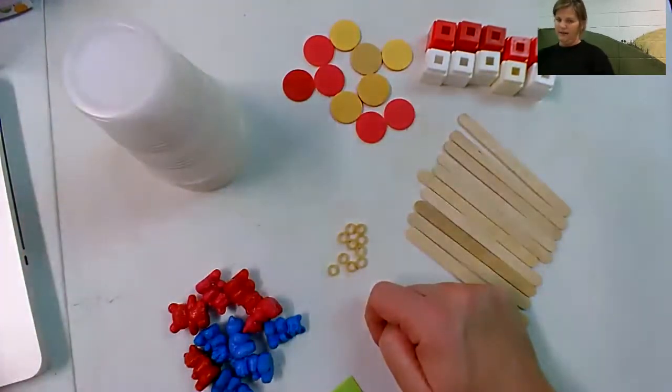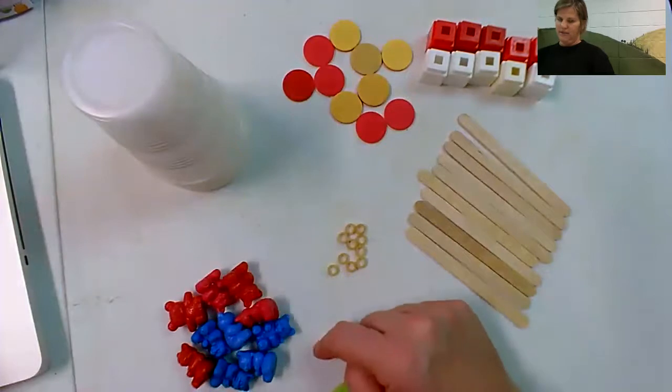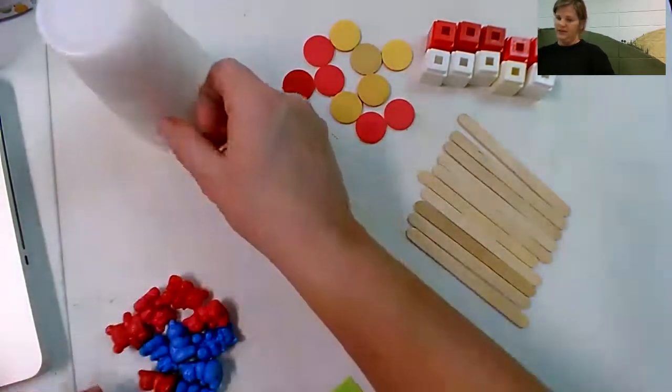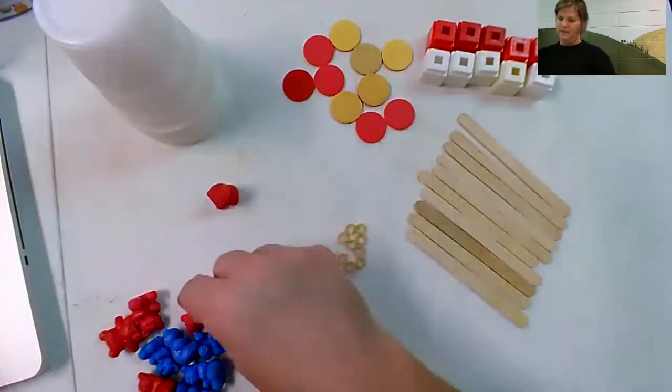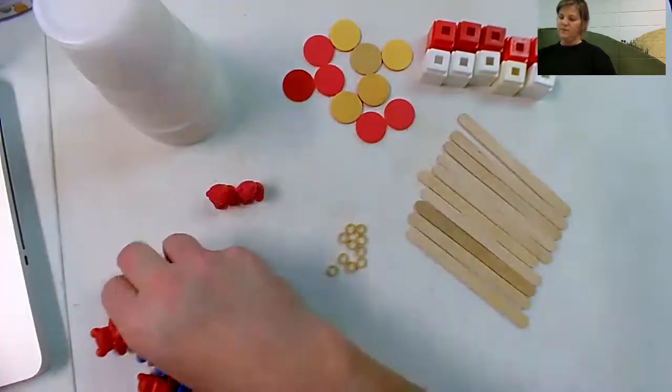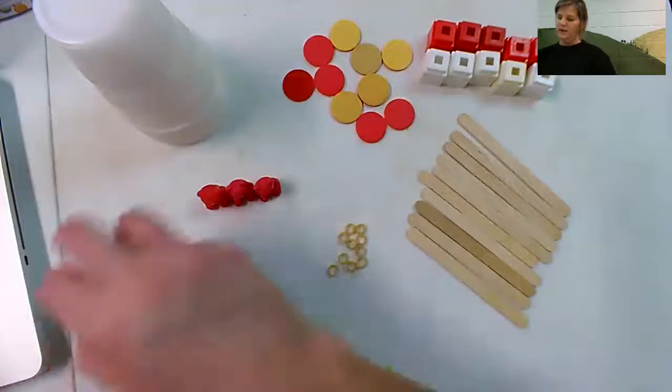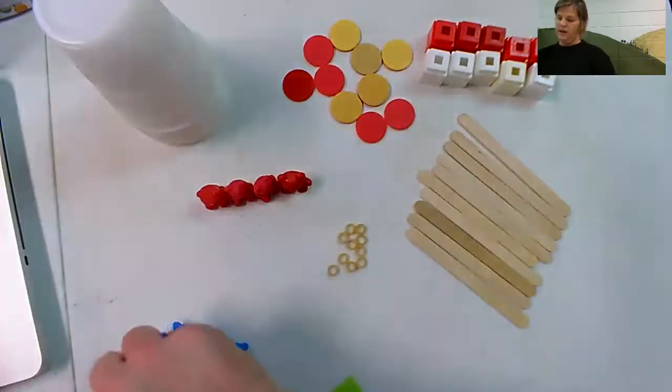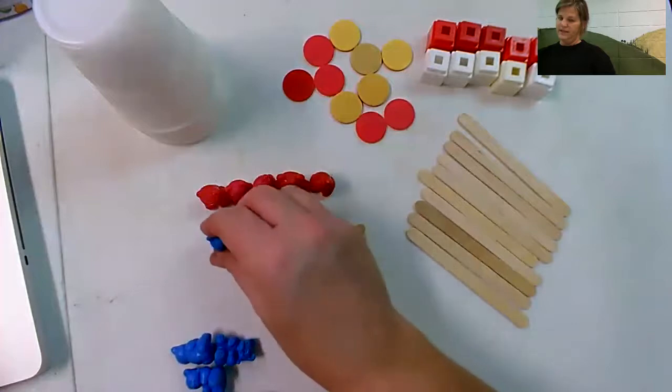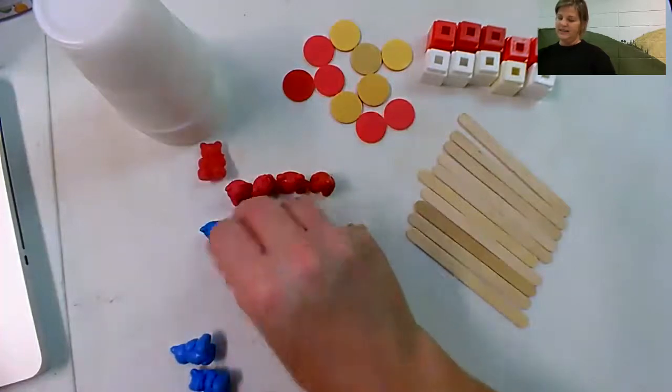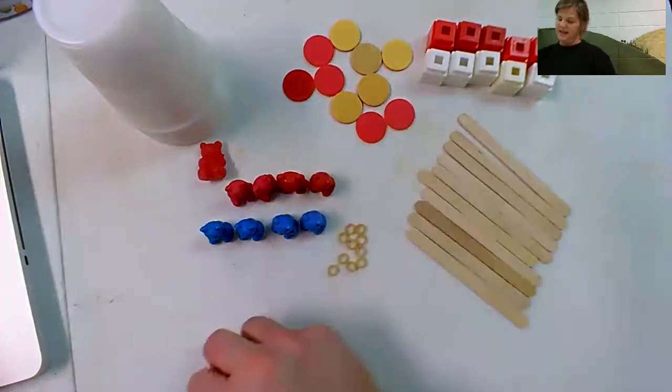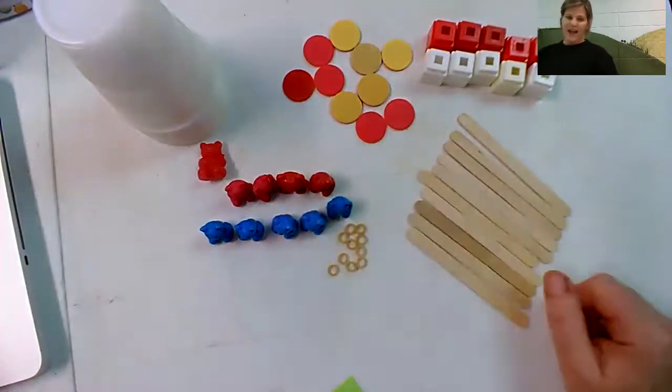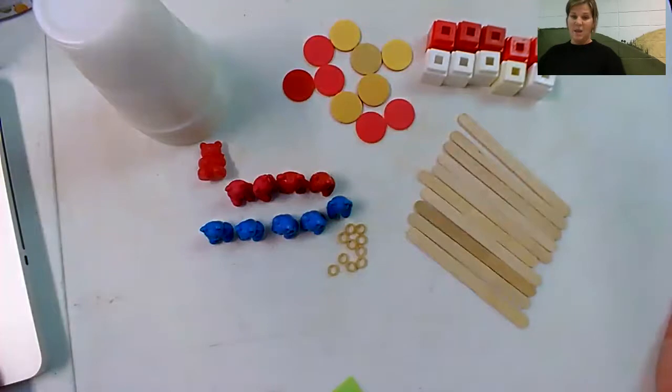I have one more pile of items. I have bears. Help me count these bears. I'm going to touch one bear and we'll say one number. One, two, three, four, five, six, seven, eight, nine, 10. And I have 10 bears.